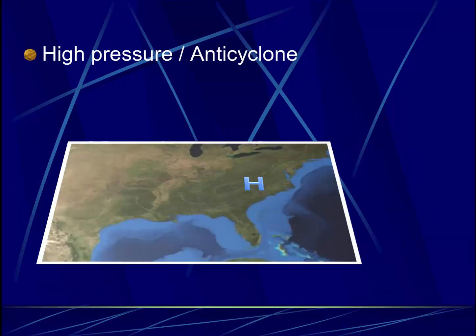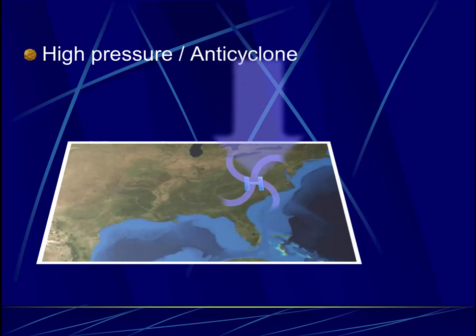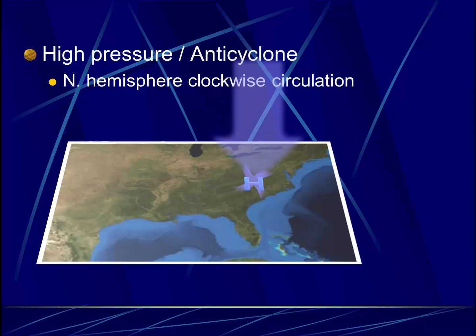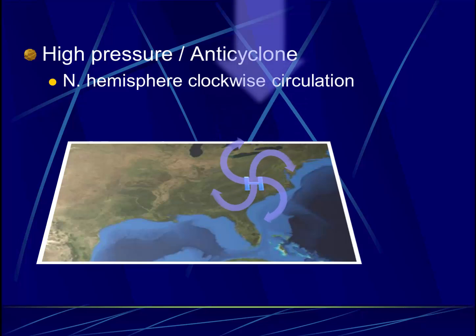To start off with, there's some vocabulary that we want to understand. When we see weather maps, we often see big blue H's. These represent high pressures, also known as anticyclones. To get an area of high pressure, there must be sinking air in the atmosphere. As the air sinks, it comes down, hits the ground, and spreads out. When it spreads out, we see that it spreads out in a clockwise circulation — this, of course, is in the northern hemisphere.